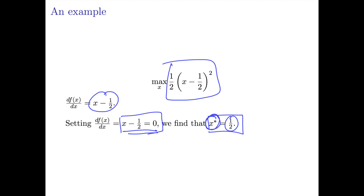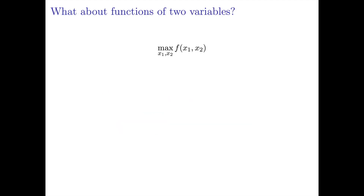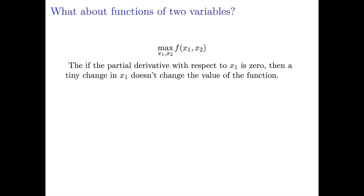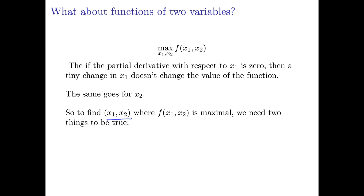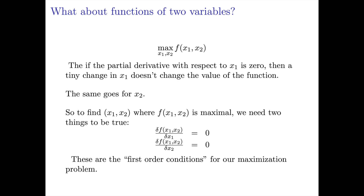That was pretty easy for a function of a single variable. What if we have two variables? We would write the maximization problem as: choose x1 and x2 to maximize f of x1 and x2. If the partial derivative with respect to x1 is zero, that means a tiny change to x1 isn't going to increase the value of f. Similarly, if the partial derivative with respect to x2 is zero, then small changes in x2 aren't going to change the value of f. So the idea is to look for the point where the partial derivatives are both zero. These are what we call first-order conditions.